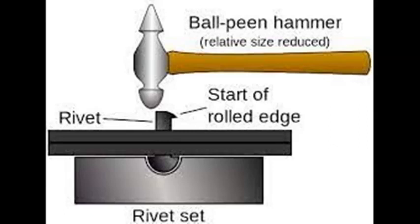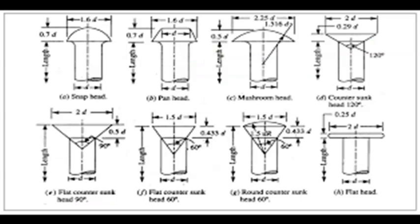From the previous discussion it is clear that a riveted joint is a type of semi-permanent and mechanical joint. Now we come to different types of rivets on the basis of the head shape.